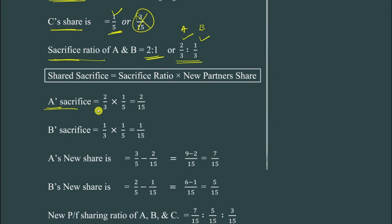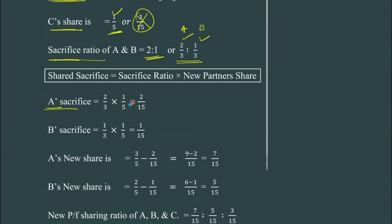For A's sacrifice: A's sacrifice ratio is 2/3. Multiply by the new partner C's share, which is fixed at 1/5. So A's sacrifice = 2/3 × 1/5. Numerator: 2 × 1 = 2. Denominator: 3 × 5 = 15. So A sacrifices 2/15. Simple calculation.